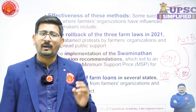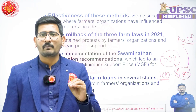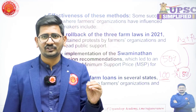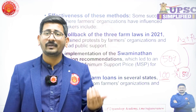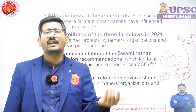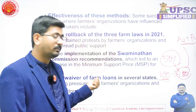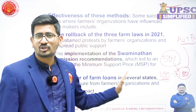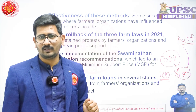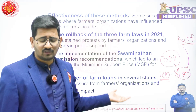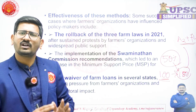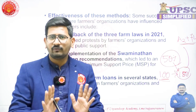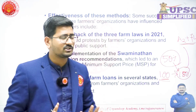The third example of effectiveness is the waiver of farm loans. We all know that farm loan waivers mainly happen during elections. Many farmers organizations made alliances with political parties, offering electoral support in return for farm loan waivers after elections. These are the key examples of effectiveness. This is a 150-word question, so that much is sufficient.